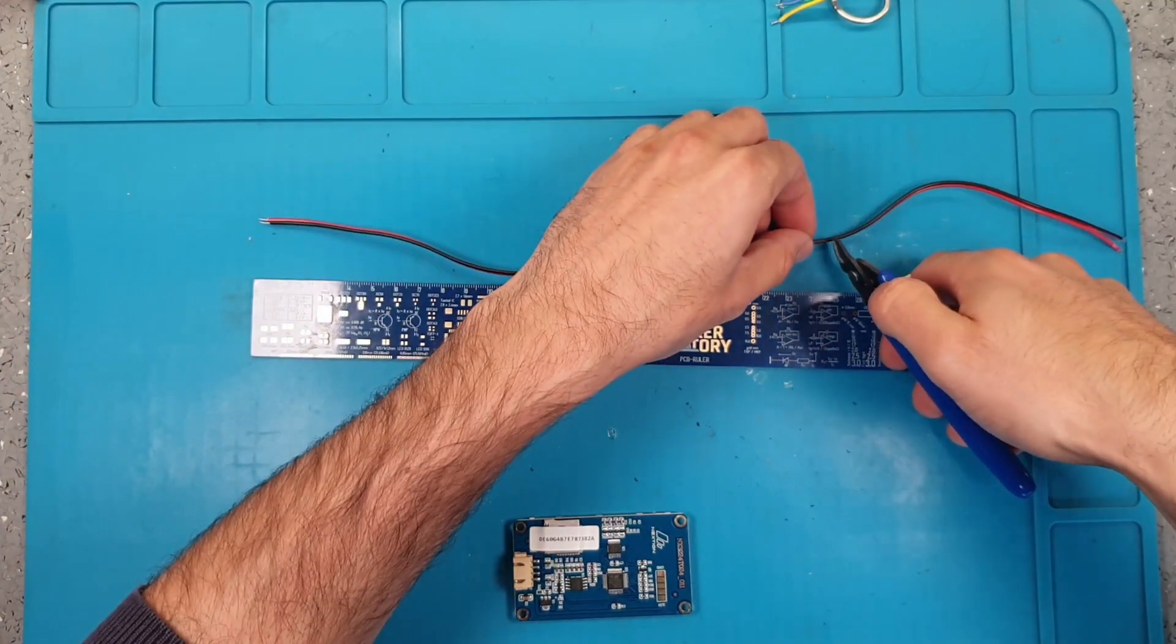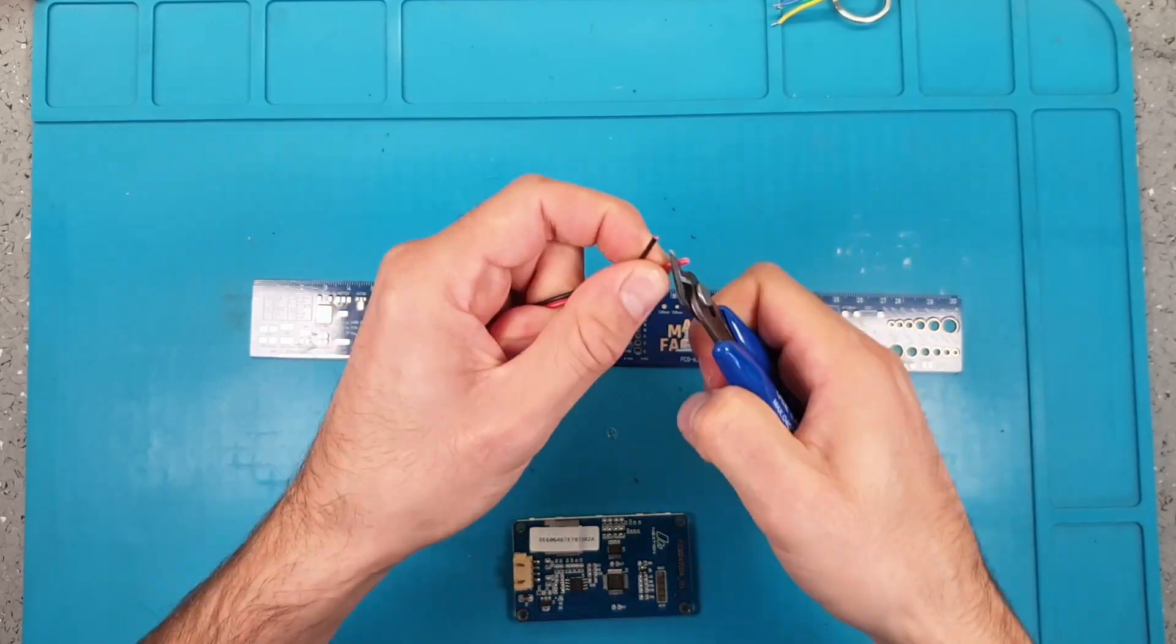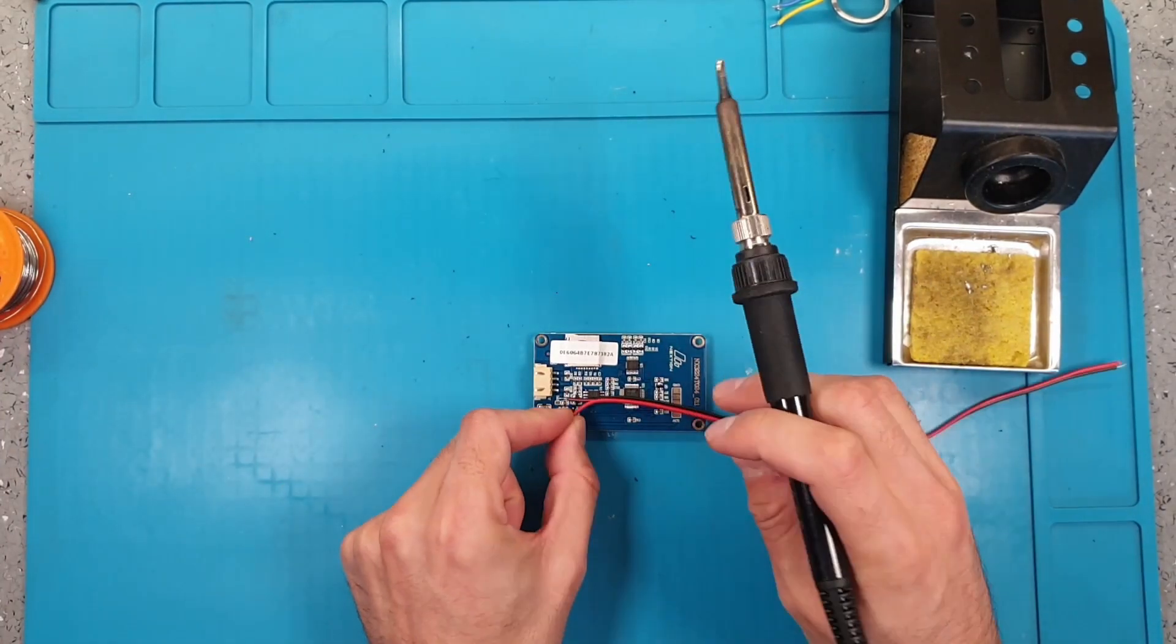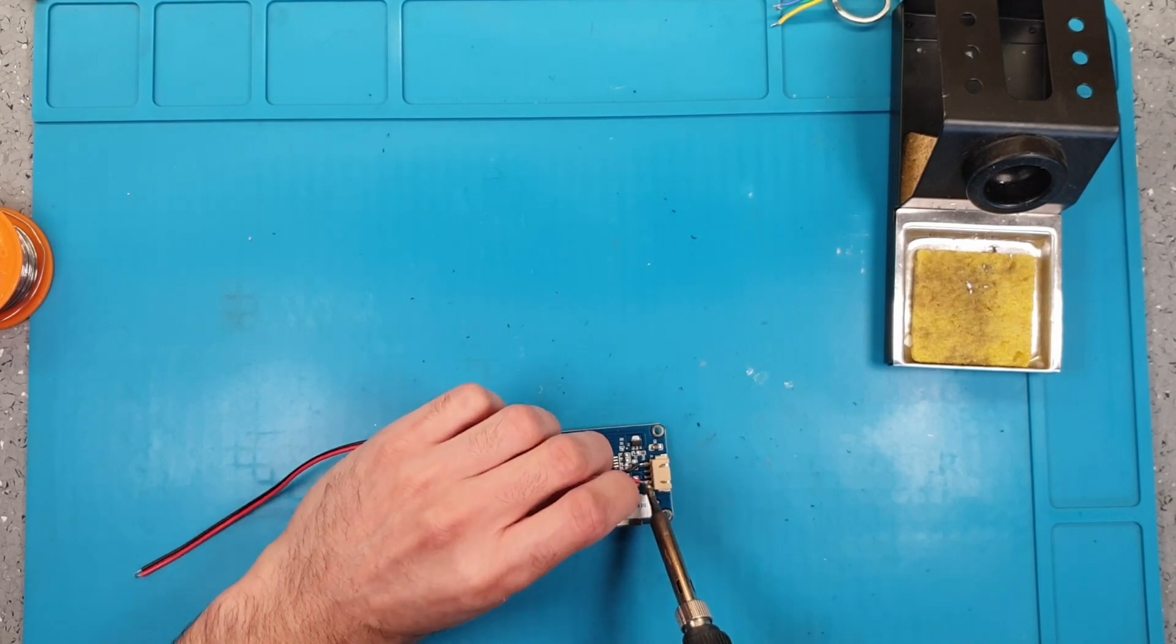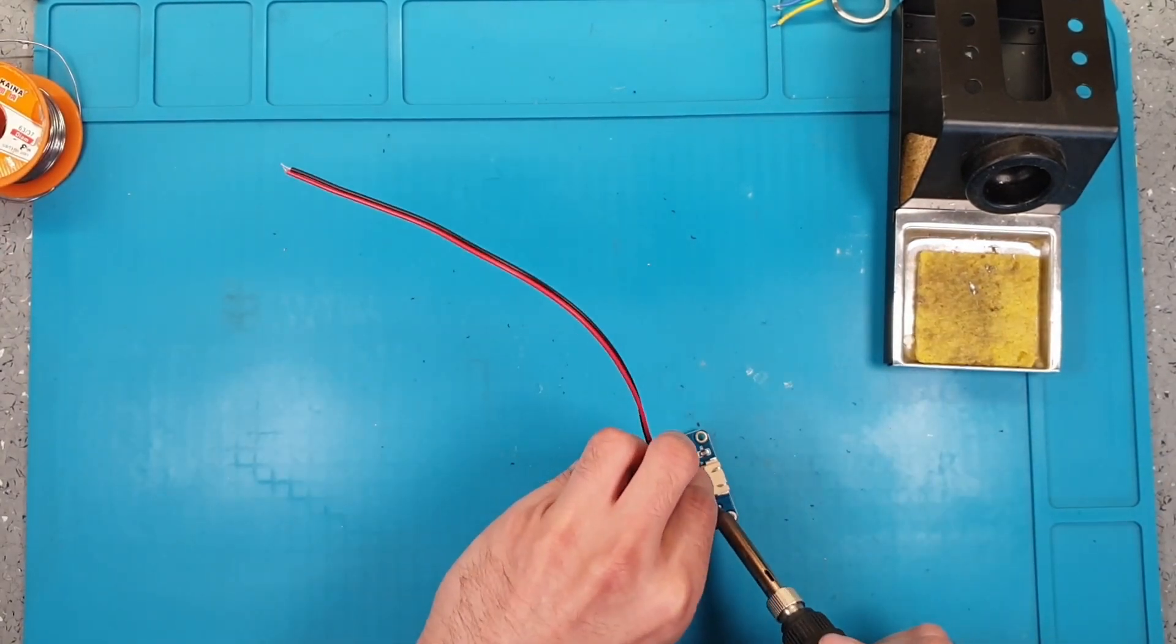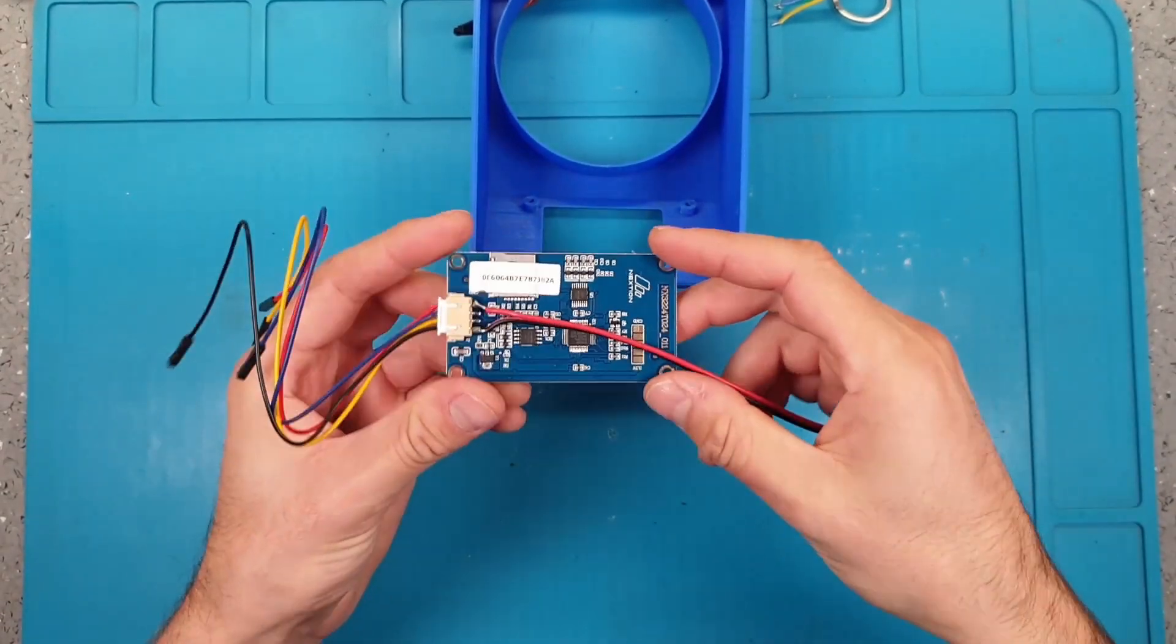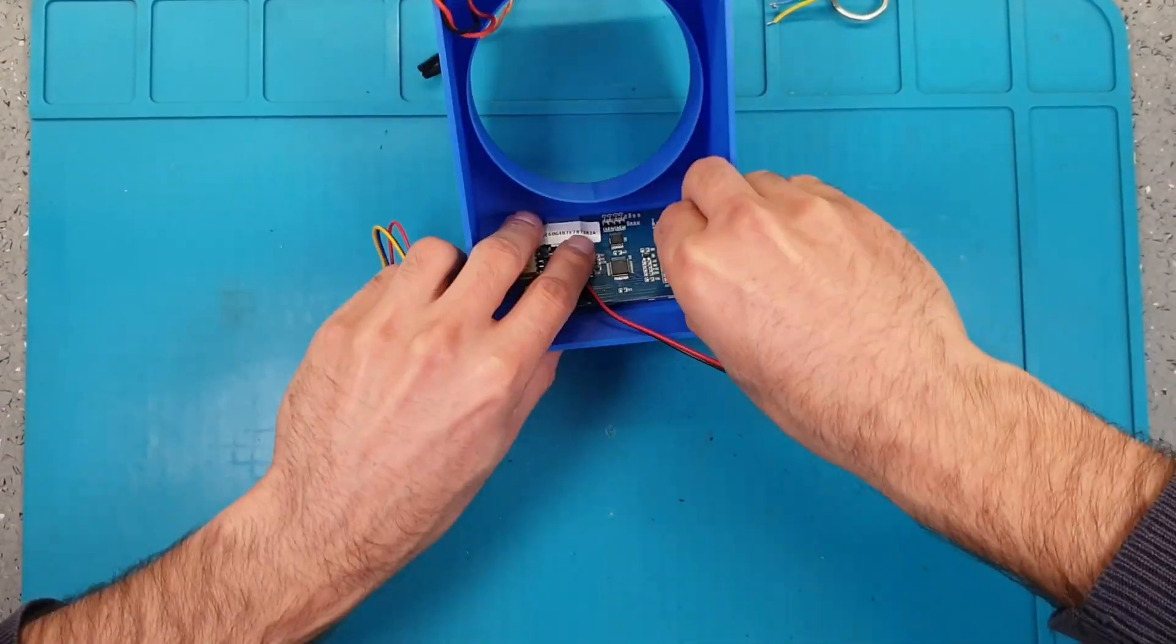Before installing the display we need to cut about 25 cm of cable and then solder it to the back part of the connector.